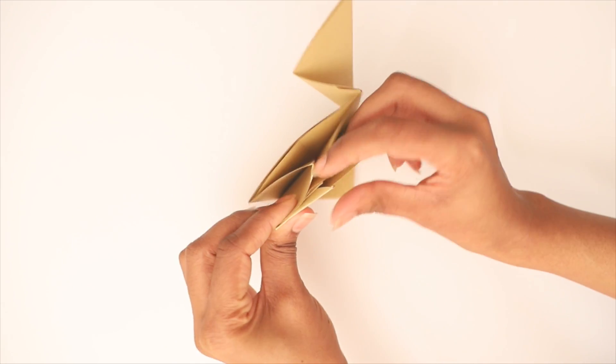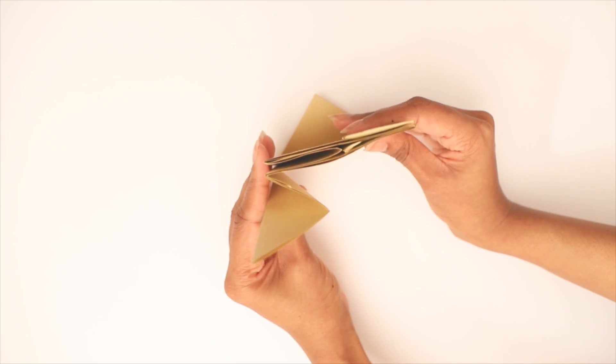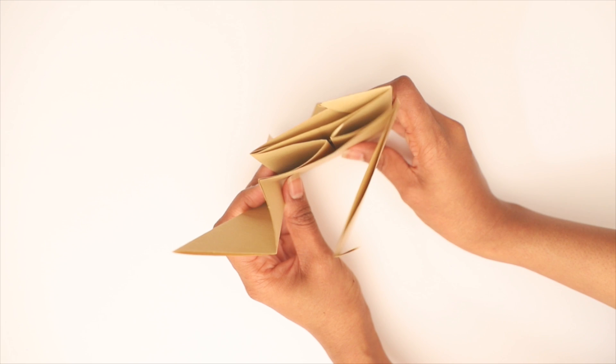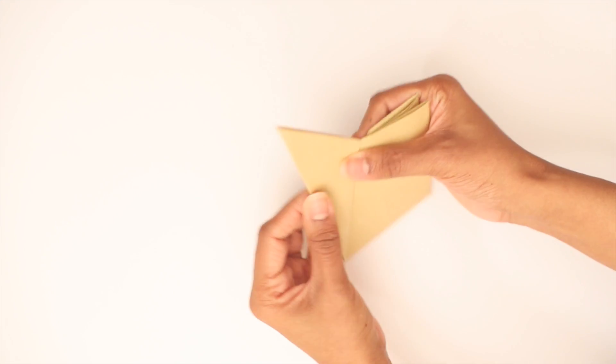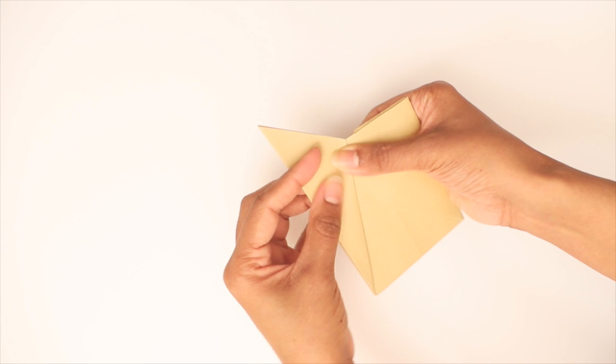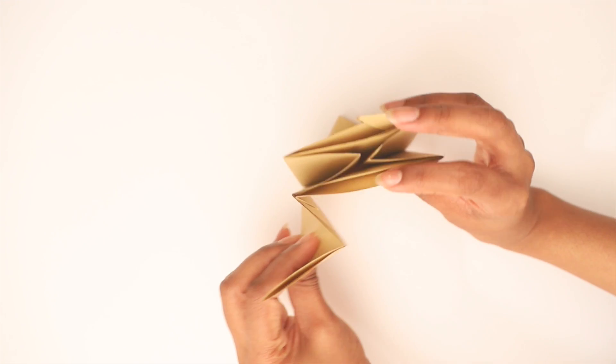Once all your triangular flaps are tucked in, you're pretty much done. All you need to do is open the bag. Just keep in mind that since the bottom of the bag is just one layer, it's great to hold light items. I think I said that a million times, but you know, it doesn't hurt to remind you unless you decide to warrior it out and fold it with a stiffer cardstock.